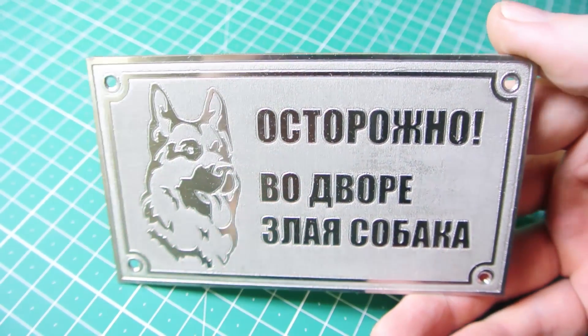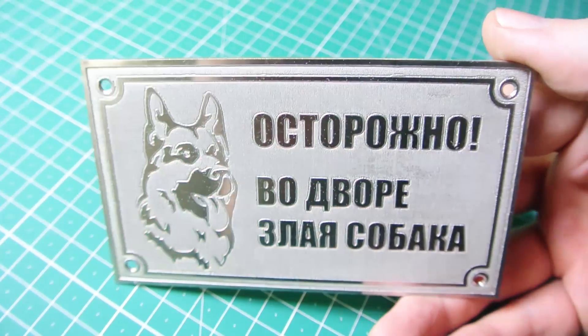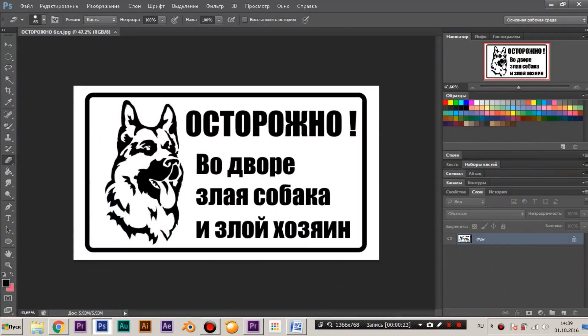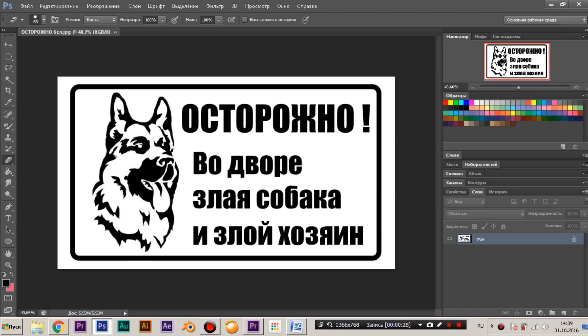In this video I want to make a sign on the gates of my house. It's in Russian and it warns that there is an angry dog in the yard. The first step is to print the template using a transparent film for printing.